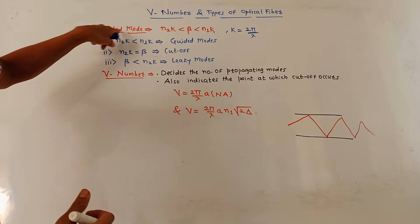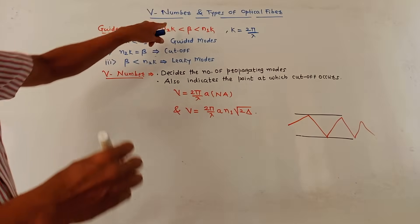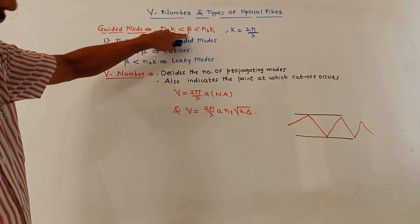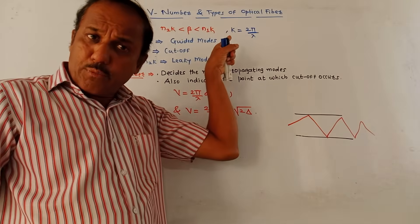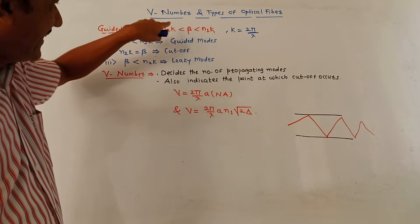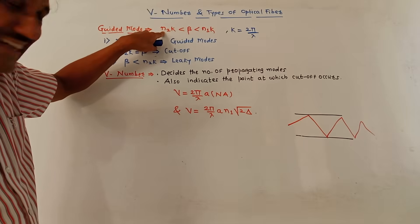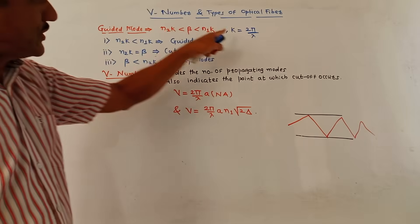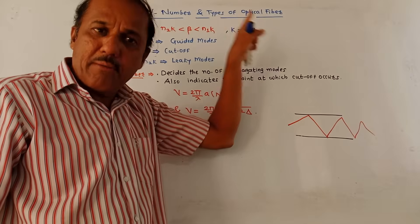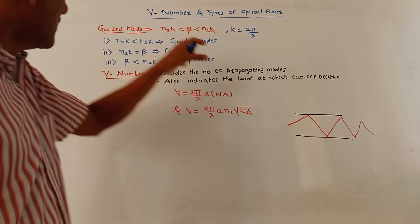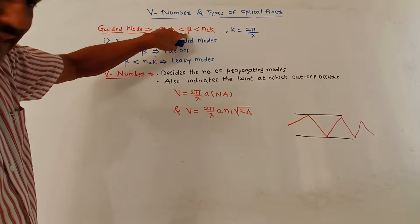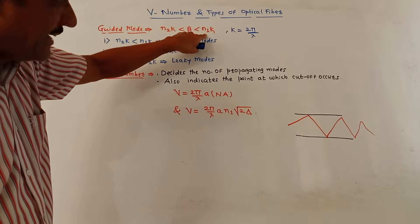The condition for guided mode is: N2K less than beta less than N1K. Beta is the phase shift constant. N1 is the refractive index of the core layer. N2 is the refractive index of the cladding layer. K is a constant given as K equals 2π divided by lambda, where lambda is the operating wavelength. So the condition for guided mode is N2K < beta < N1K.